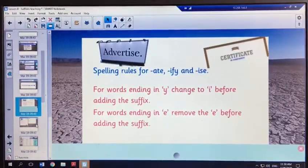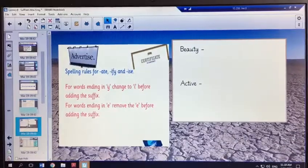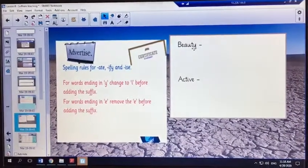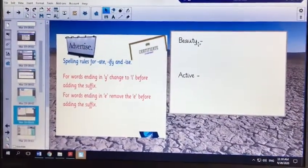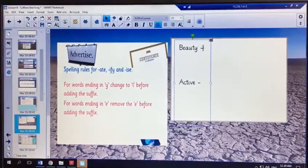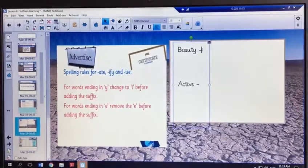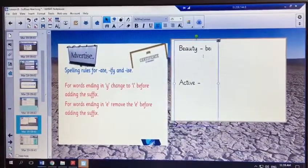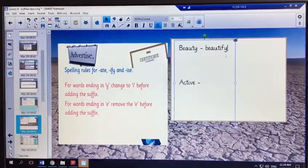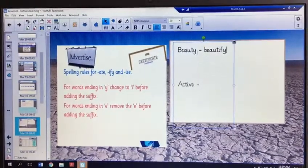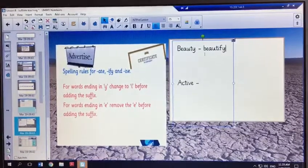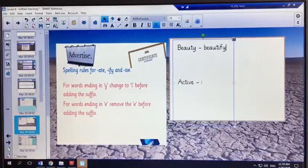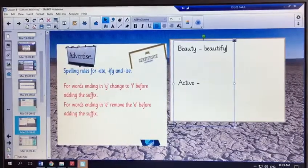So I'm just going to move on to our next slide and I'm going to give you an example for these spelling rules. So for example, beauty ends in y. Now if we add the suffix -ify you will see that I have removed the y before adding the suffix, or I have changed it into an i.